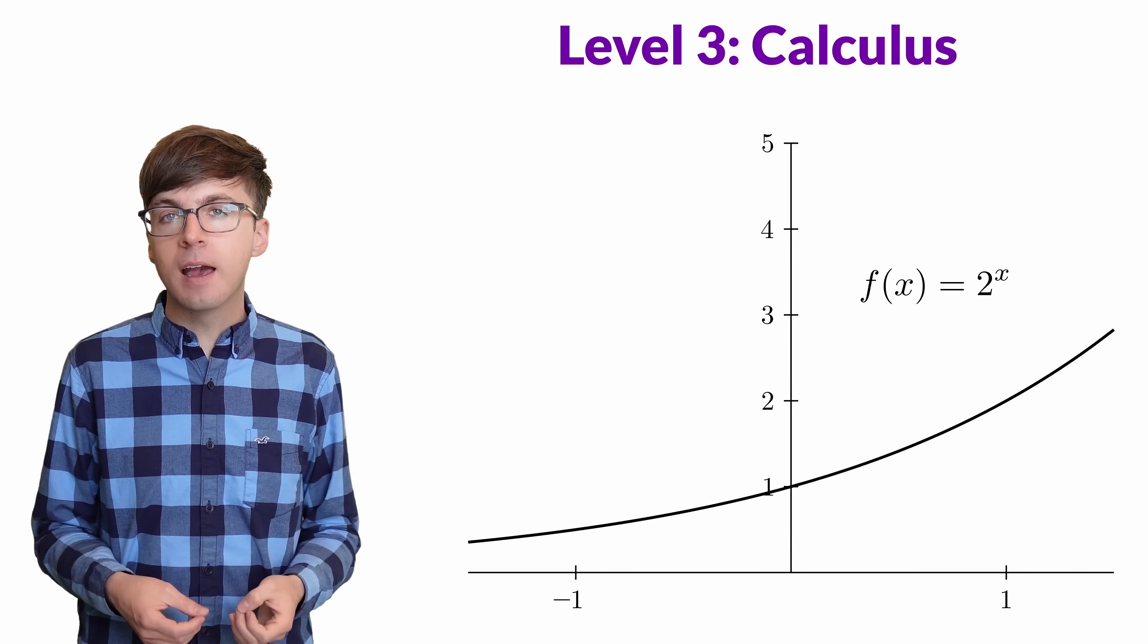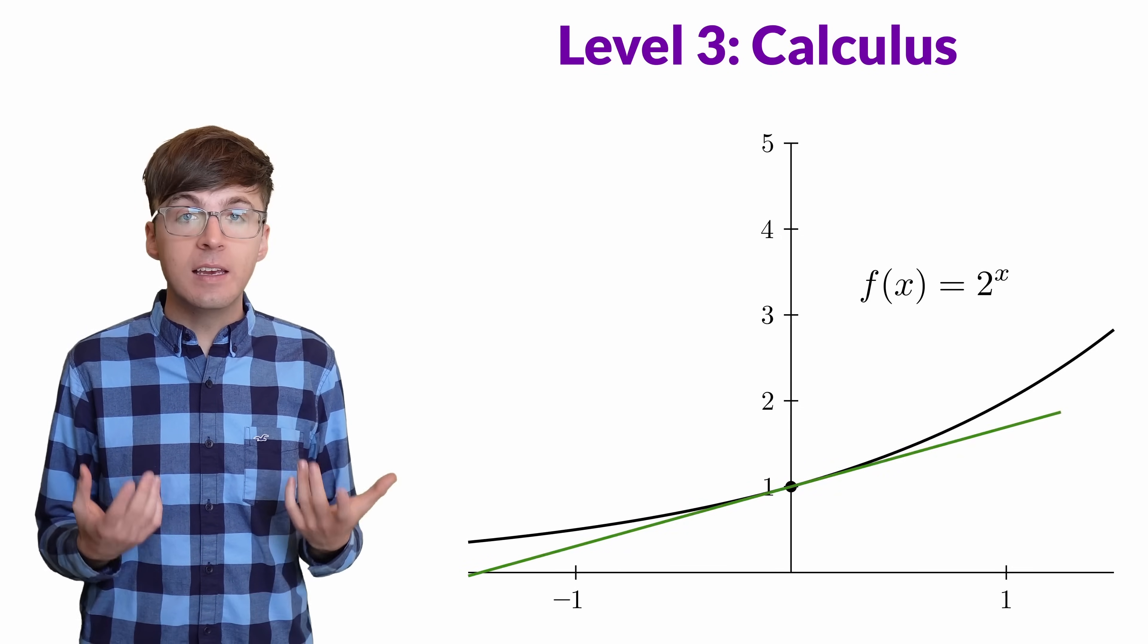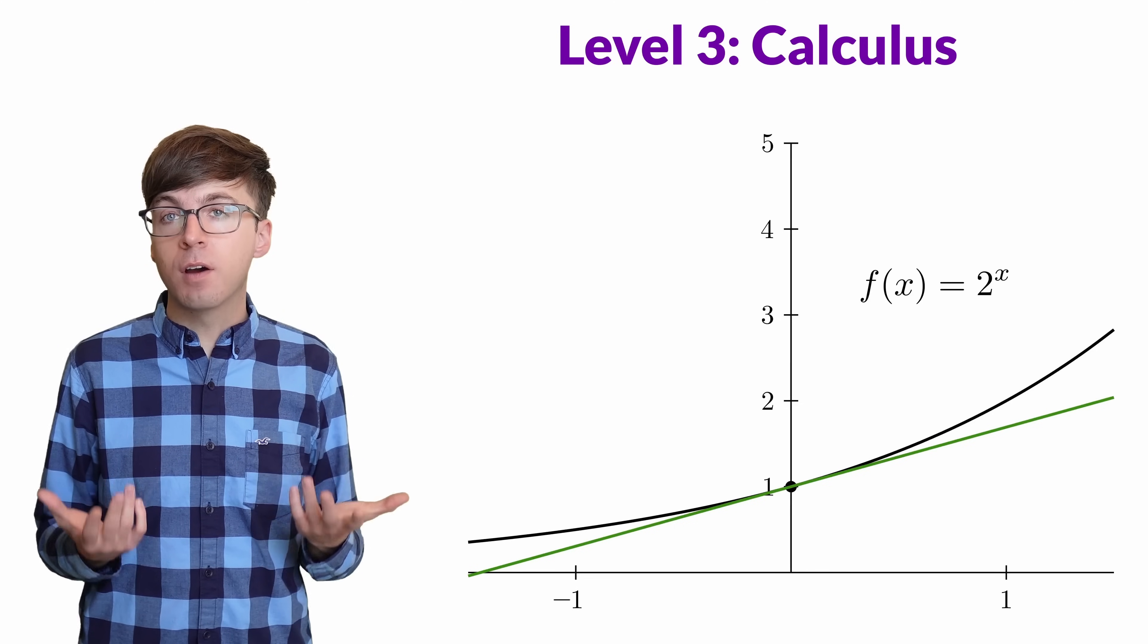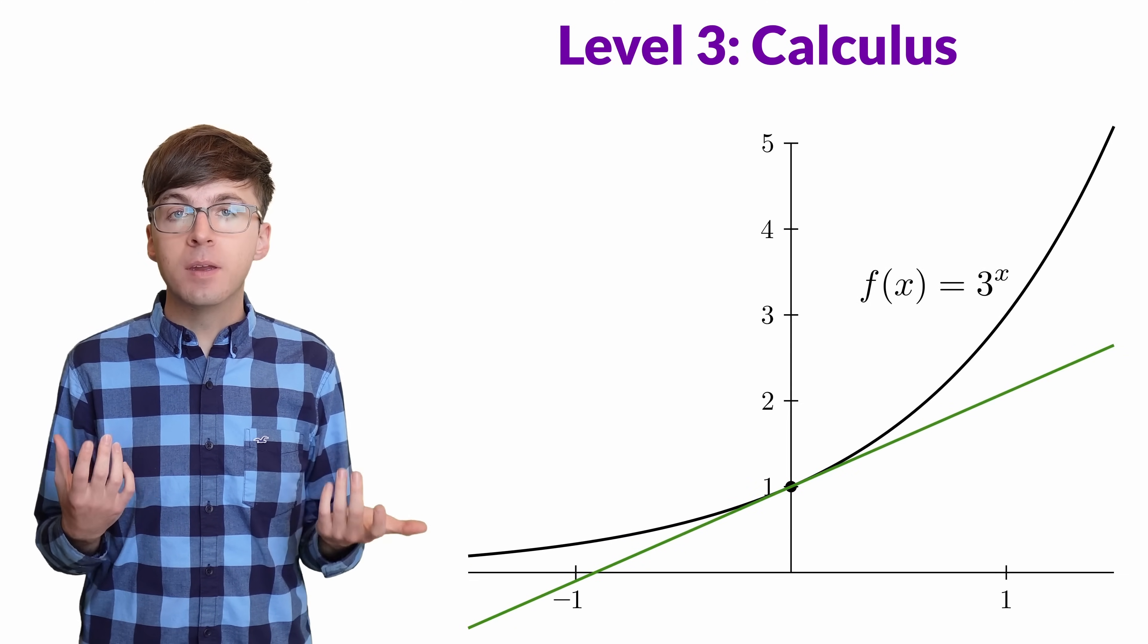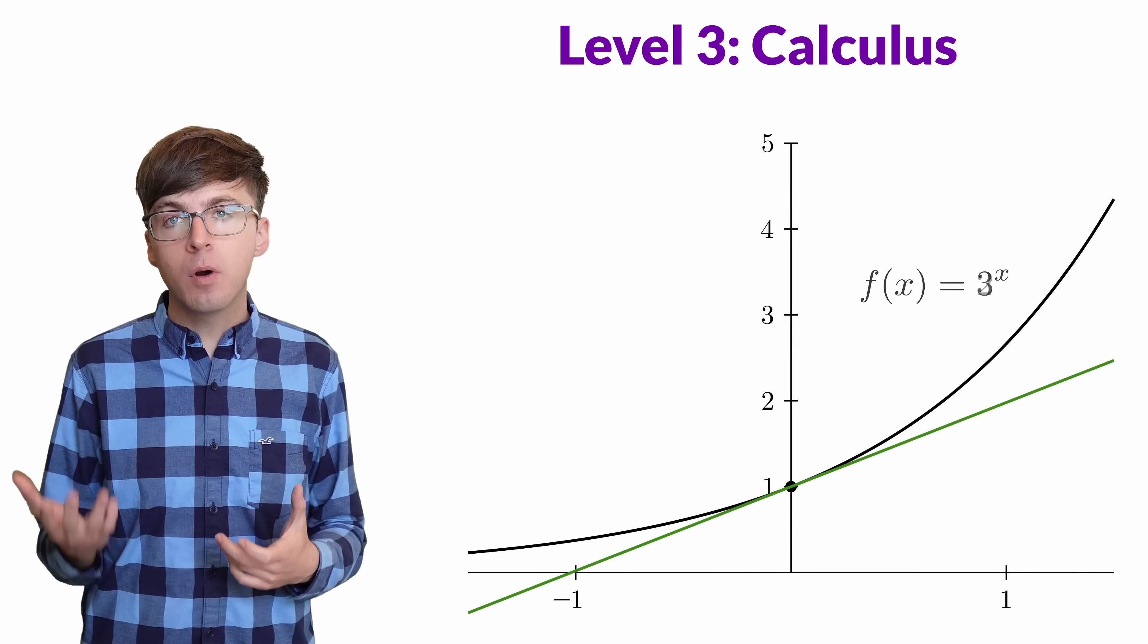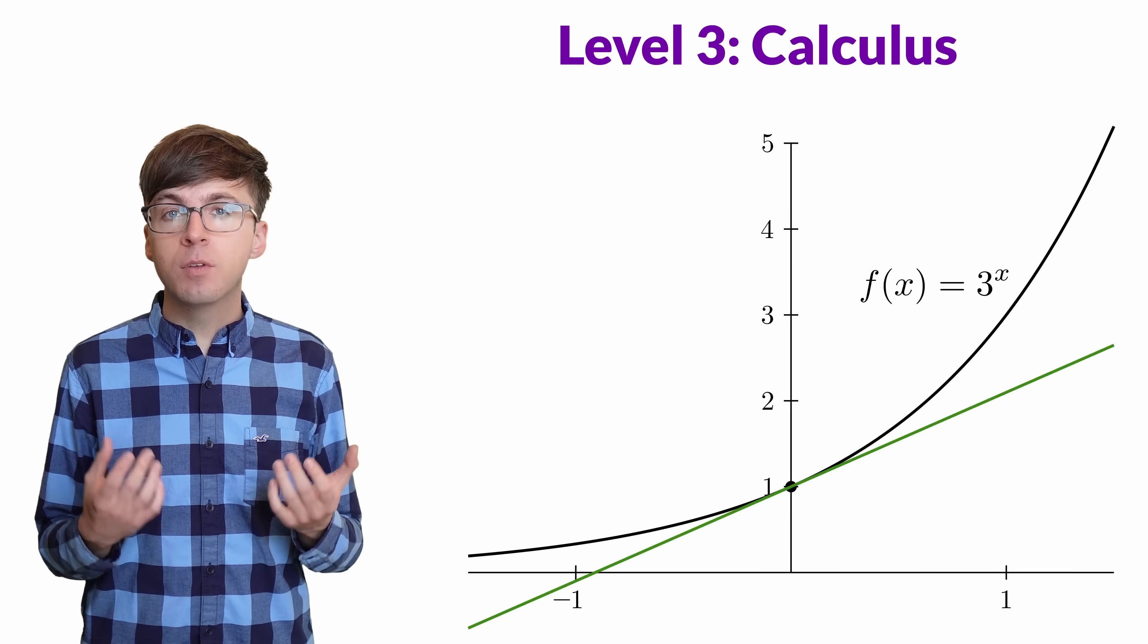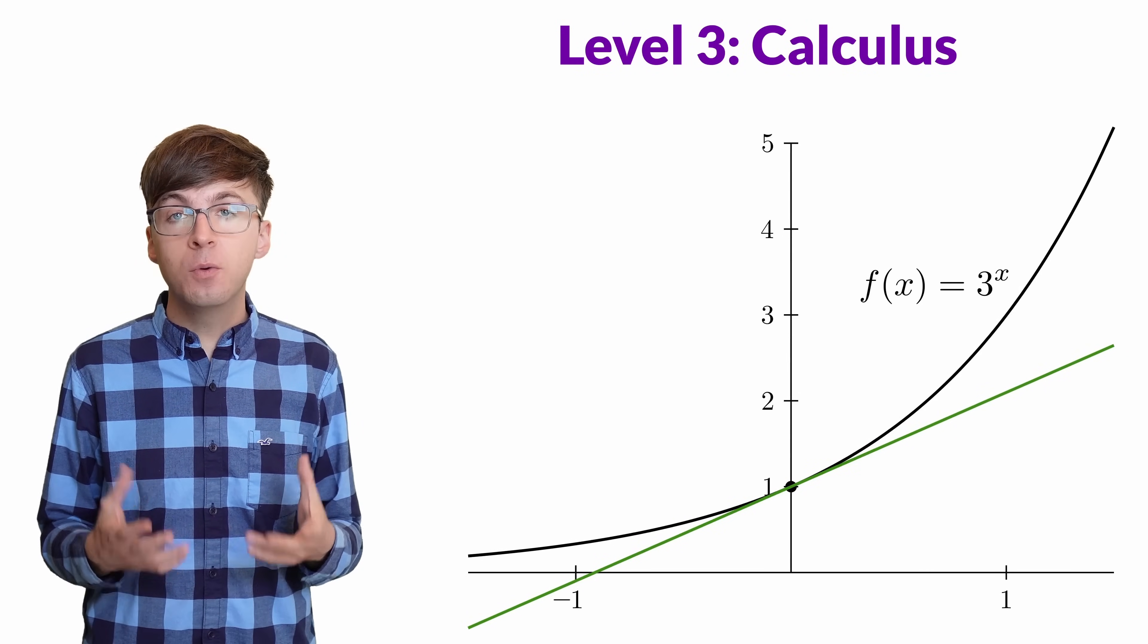Let's look at the function 2 to the x. If we find its derivative when x equals 0, the instantaneous slope at that point, it's a bit less than 1. If we find the derivative of 3 to the x when x equals 0, now the slope is a bit more than 1. As the value of the base of the function increases, the slope also increases. So somewhere between a base of 2 and 3, there is a value that will have derivative exactly equal to 1. And that value is e.